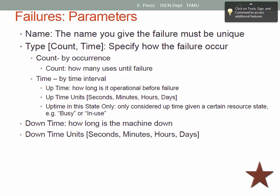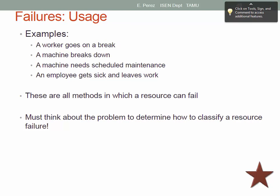Downtime — how long the machine is down — is also expressed in seconds, minutes, hours, or days. Examples of when to use failures include: workers going on a break, machine breakdown, scheduled maintenance, or an employee getting sick and leaving work. All of these are methods by which a resource can fail. You must think about the problem carefully to determine how to classify a resource failure, and make sure you get the right data from the system.